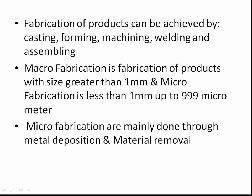Fabrication of products can be achieved by Casting, Forming, Machining, Welding, and Assembling. Macro-fabrication is fabrication of products with size greater than 1 mm, and micro-fabrication is less than 1 mm up to 999 micrometers. Micro-fabrication is mainly done through metal deposition and material removal.